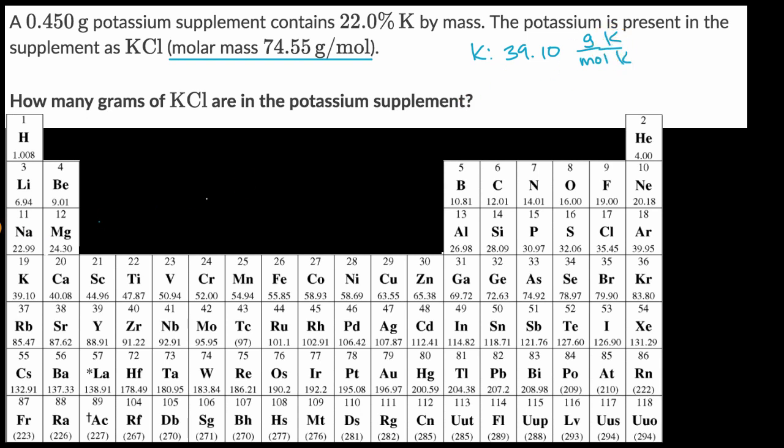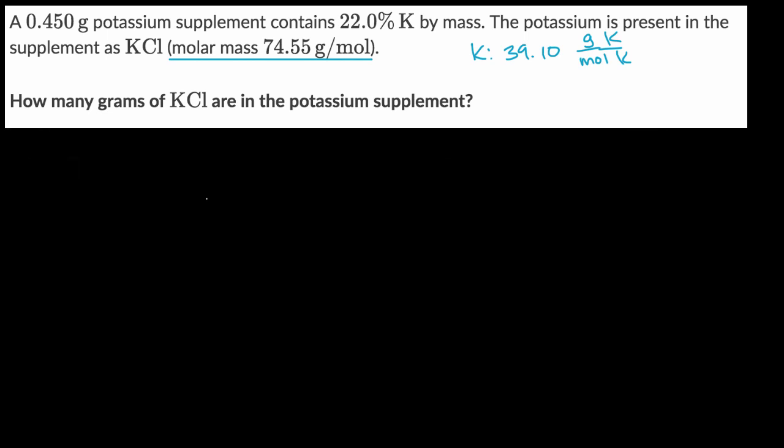I could write it like that. And that is, I think, all we will need the periodic table of elements for. And so how do we think about how many grams of potassium chloride are in the potassium supplement? Well, what I could do is I could say, all right, what's the total mass of my supplement, and multiply it by 22% to figure out what is the mass of potassium I have. So let me figure that out.